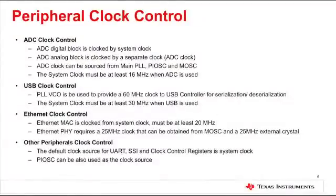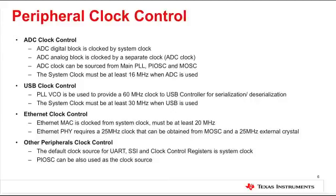The clock to other key peripherals can also be obtained from different clock sources. For example, the ADC clock can be sourced from the main PLL, precision internal oscillator, or main oscillator. Keep in mind that the system clock must be at least 16 MHz while using the ADC. Likewise, the system clock must be at least 30 MHz while using the USB module. Another important point is that the system clock must be at least 20 MHz while using Ethernet MAC. If you are using the integrated PHY, please make sure that you have a 25 MHz clock source connected to the main oscillator.